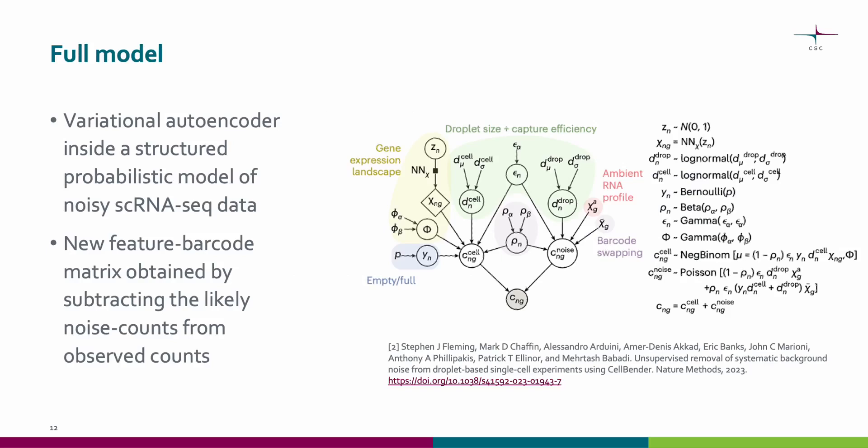Here is an illustration of the full model. CellBender takes into account steps in the data generation process, such as droplet size and capture efficiency. Here are the noise counts and here are the true cell UMI counts. Here is the neural network that determines the prior on true cell UMI counts. And here are the observed UMI counts. The estimated new feature barcode matrix is obtained by subtracting the likely noise counts from the observed counts.